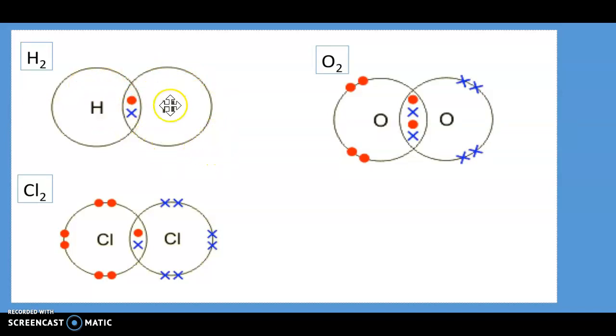Oxygen has six electrons in the outer configuration. So if you look at the red dots and then the blue crosses on this side, they share a pair of electrons each.